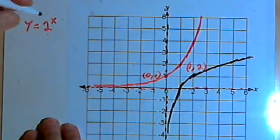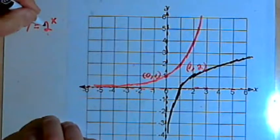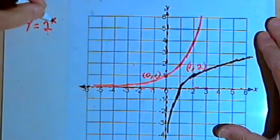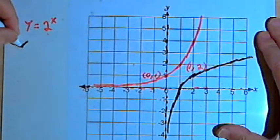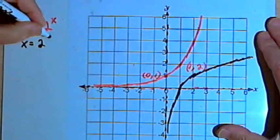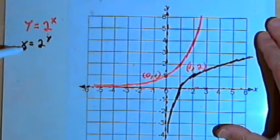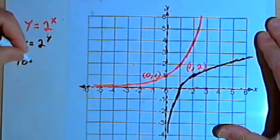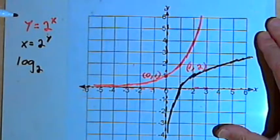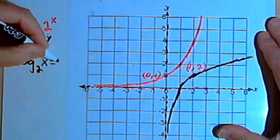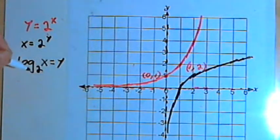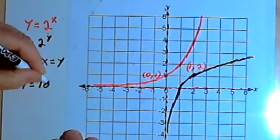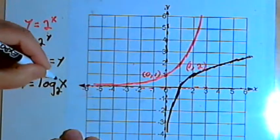Let's mathematically find the inverse for this function, for y equals 2 to the x. Just as I did with the graph, I'm going to swap the x's and the y's. So I'm going to have x equals 2 raised to the y. And now I'm going to take this exponential equation and turn it into logarithmic form. So I'll have log base 2 of x equals y. And to make it look more like a standard function, I'll swap the two sides to get y equals log base 2 of x.